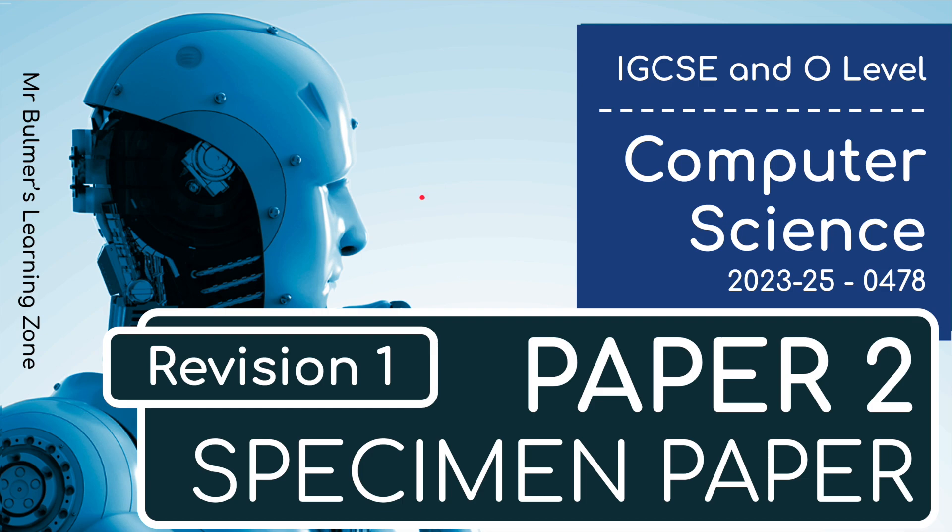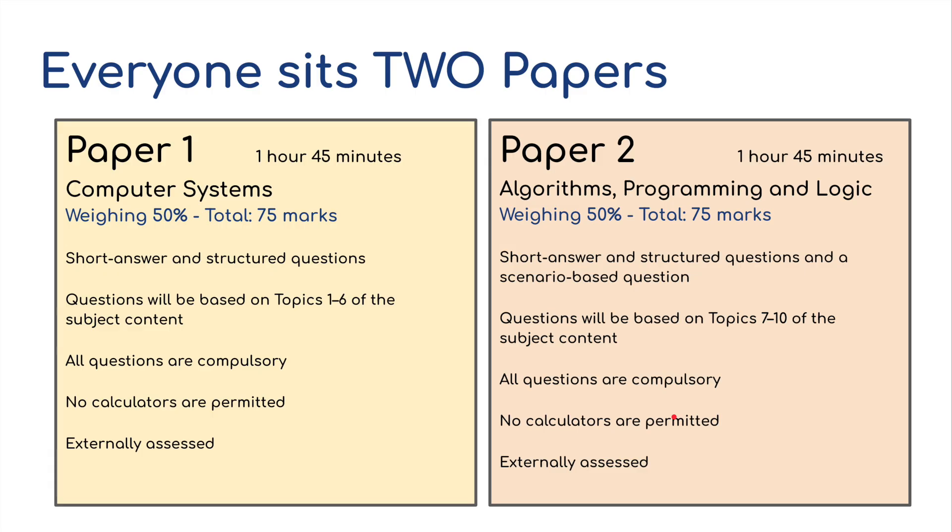Hello and welcome back. I want to talk about paper 2 for computer science for the new specification 0478. This is a specimen paper available on the Cambridge website. The specification has changed. Everybody now sits two papers, but the timings and weightings have changed. Paper 1 and paper 2 are both an hour and 45 minutes. We've got the theory paper, paper 1, and the programming paper, paper 2. Weighting 50% for both and total marks is 75 for both.